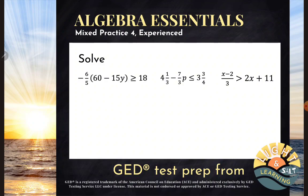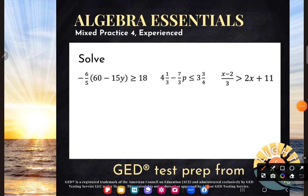First example: solve negative six-fifths times the quantity of 60 minus 15y is greater than or equal to 18. There are a couple of different ways we could go about this. The first issue we have is the fact that this negative six-fifths is shoved up against these parentheses, meaning that it's multiplying that grouping. We actually have choices — we could do the multiplication or get rid of it by doing the opposite. But since we've been simplifying before we solve, I will just perform the multiplication. We know how to multiply a number by a grouping by distributing.